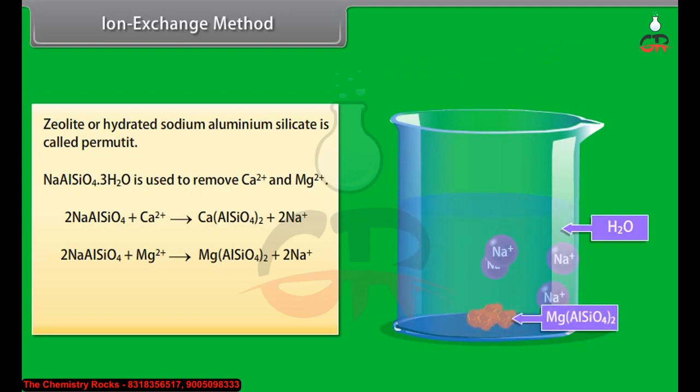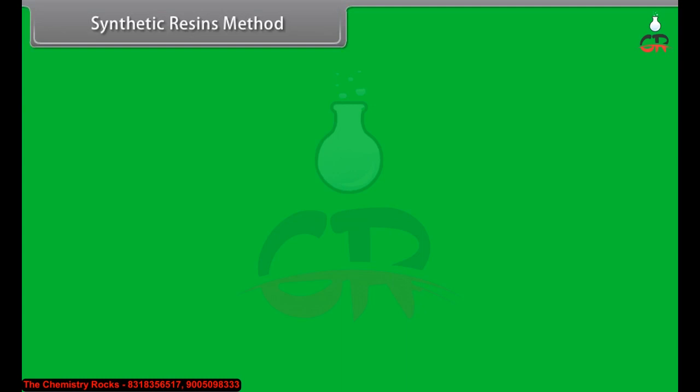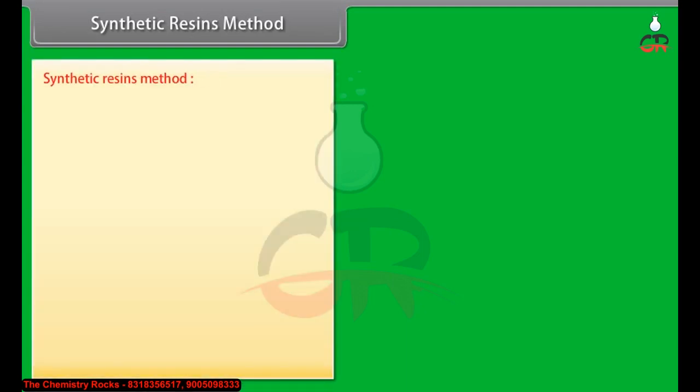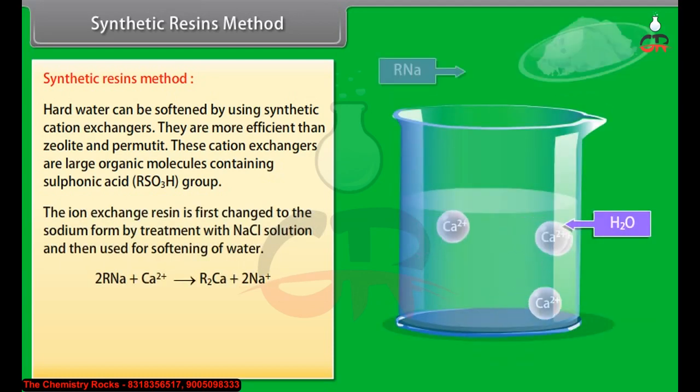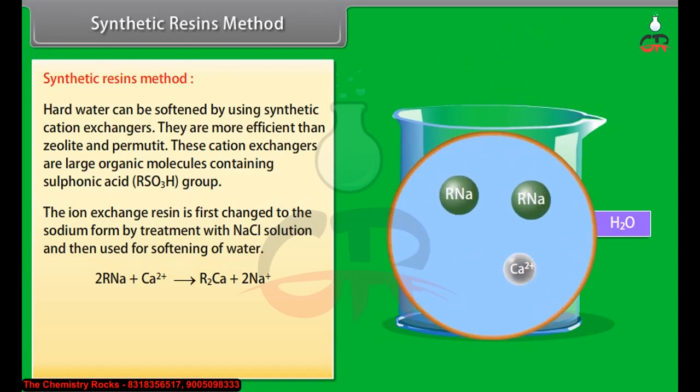The zeolite can be regenerated by treatment with NaCl solution. Synthetic resins method: hard water can be softened by using synthetic cation exchangers. They are more efficient than zeolite and permutate. These cation exchangers are large organic molecules containing sulfonic acid (RSO3H group). The ion exchange resin is first changed to the sodium form by treatment with NaCl solution and then used for softening of water. The resin can be regenerated for further use by treatment with NaCl solution.